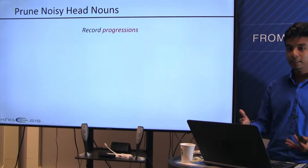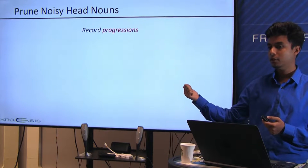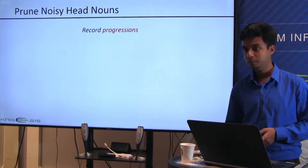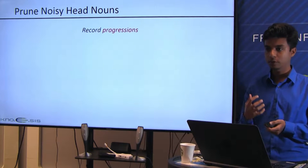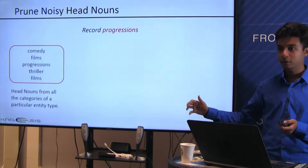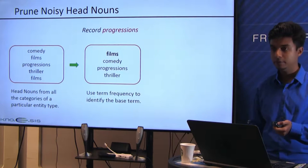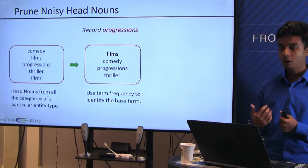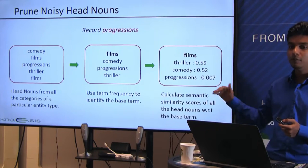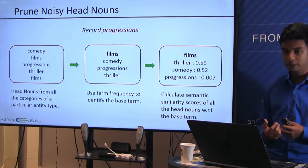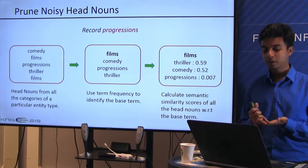We identify a base representation by taking all categories of Wikipedia movies, extracting all head nouns, and hypothesizing that the term with the highest frequency best represents the entity type — in this case, 'films.' We then compare all other head nouns to this base term using semantic similarity, keeping those above a 0.5 threshold as valid semantic cues. To calculate semantic similarity, we trained a skip-gram model on the Wikipedia 2014 dataset.